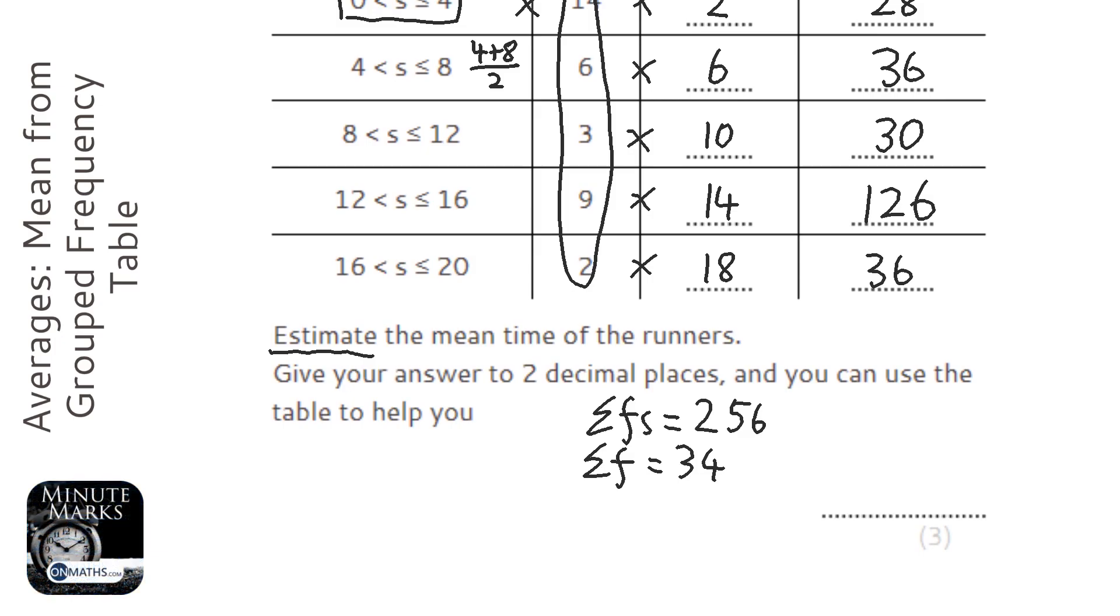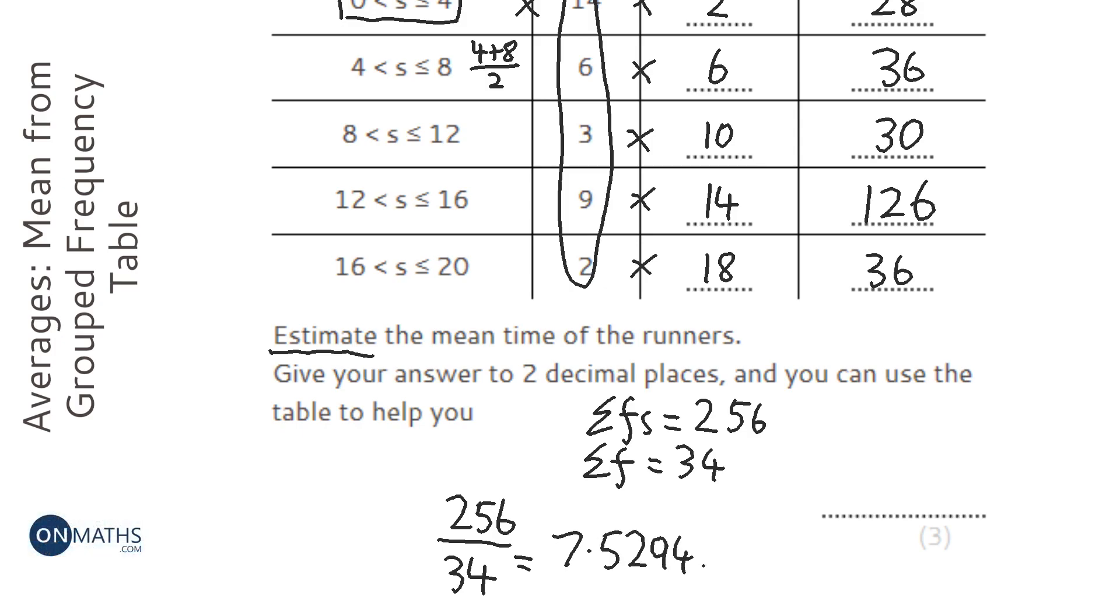And then what we're going to do is we're going to get the 256, which is all our values added together, and divide it by 34. So, 256 divided by 34. And I get the answer of 7.5294, and to two decimal places, that's going to be 7.53.